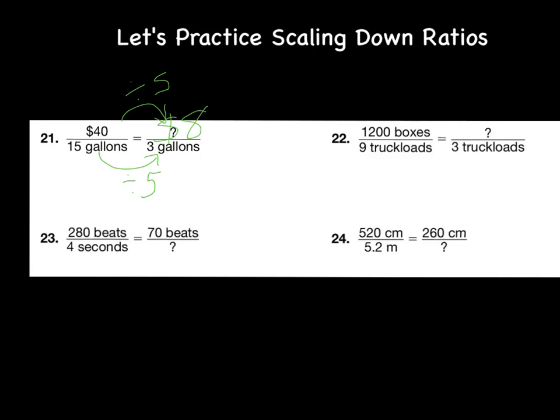Next we have twelve hundred boxes for nine truckloads, but I want to know how many would that be for three truckloads. What did I divide nine by to get to three? You would divide by three. So I need to do the same thing to the number on top to keep the ratio equivalent. Twelve hundred divided by three would be four hundred.